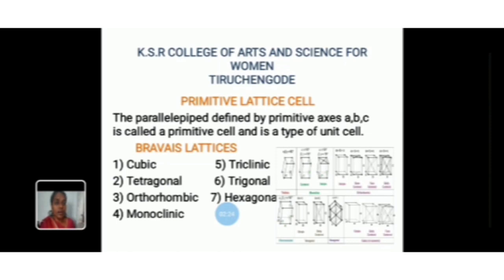Then, primitive cell. The parallelepiped defined by the primitive axes A, B, C is called the primitive cell. The primitive cell is a type of unit cell.